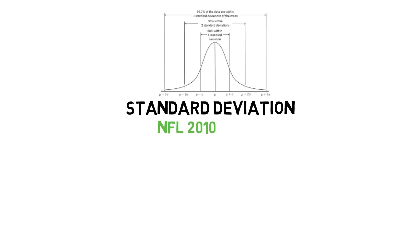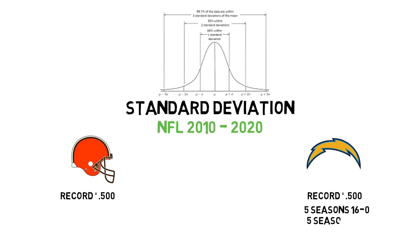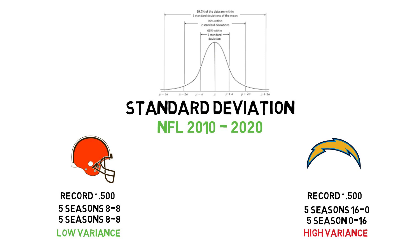Quickly imagine two NFL teams which over a 10-year span have an average season win total of 50%. Imagine team one went 16 and 0 five times yet finished 0 and 16 another five times — this team could be said to have high variance in its long-term performance. While team two finished 8 and 8 for 10 years straight could be said to have low variance. Both have win averages of 50%, however how much they differed from the average could be measured as variance.